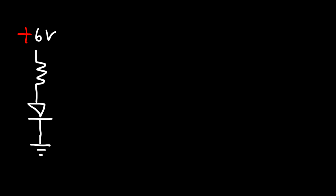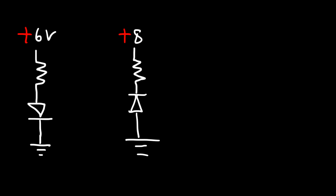Now consider three situations. For each one, determine if the diode is on or off — whether the circuit conducts electricity or not. The first has a positive 6-volt source, the second has a positive 8-volt source, and the third has a negative 7-volt source.